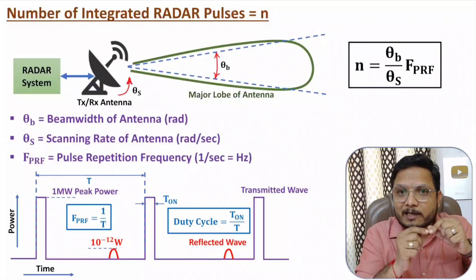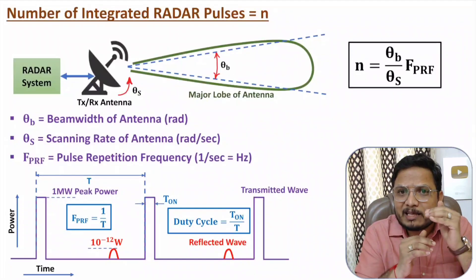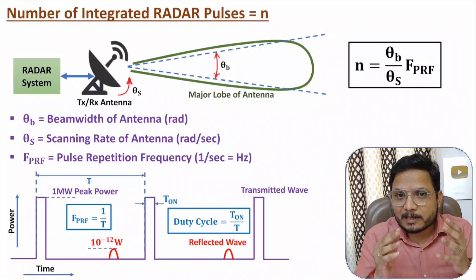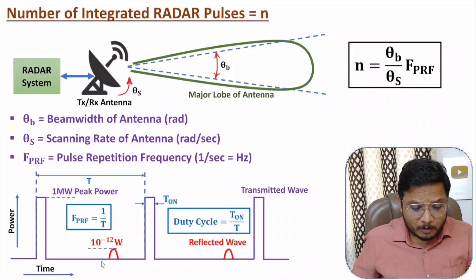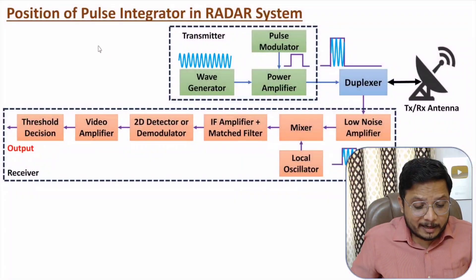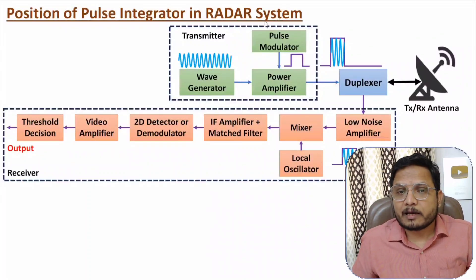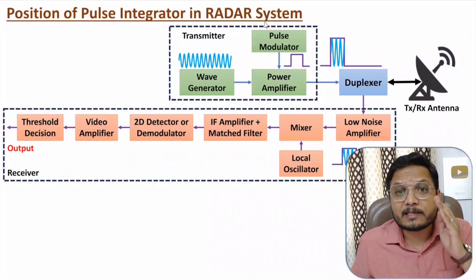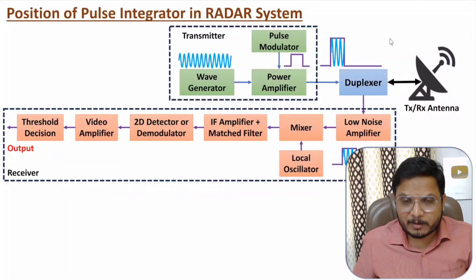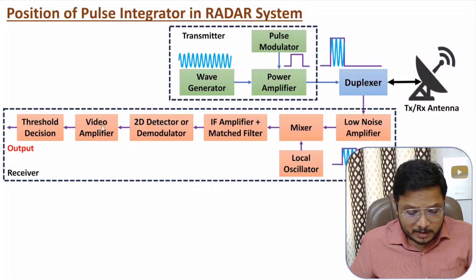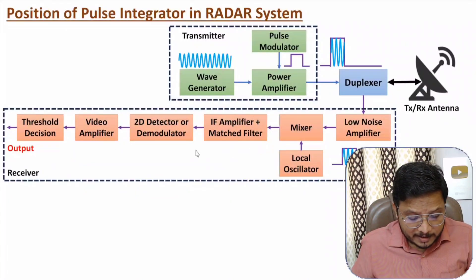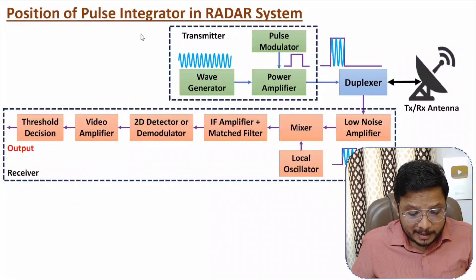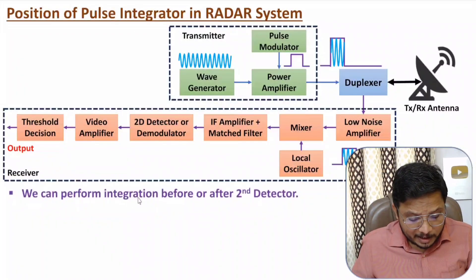The total strength of the received echo signal increases, which is also beneficial for threshold detection since more pulses are available. Now, the integrator is placed in the receiver of the radar system. I have explained the pulsed radar receiver block diagram in earlier videos. In that receiver, we can place the integrator before or after the second detector — integration can be performed at both positions.